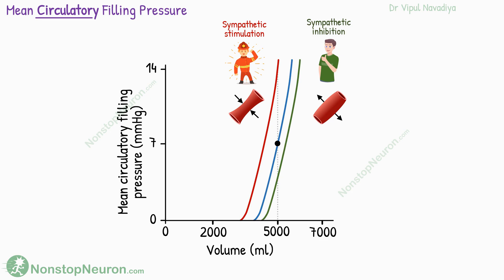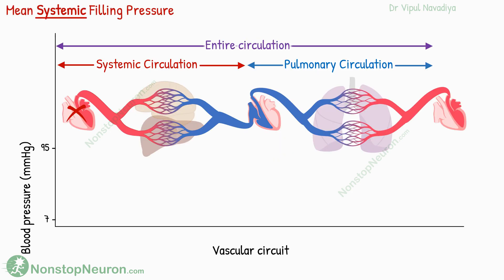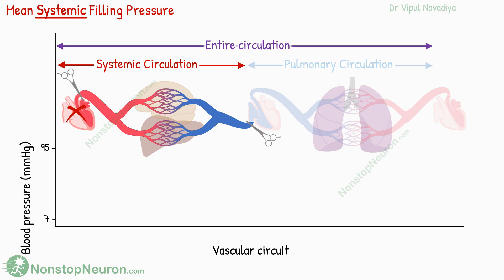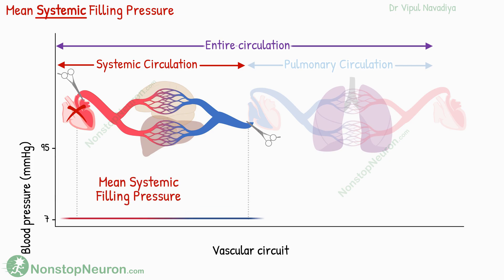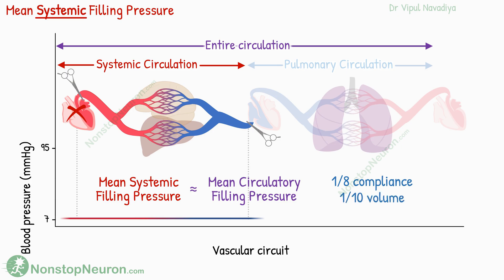So this was mean circulatory filling pressure. Now let's talk about mean systemic filling pressure. If we clamp the large arteries near the heart, the systemic circulation gets disconnected from the pulmonary circulation. The filling pressure in the systemic circulation in this case is called mean systemic filling pressure. It's almost the same as mean circulatory filling pressure because the pulmonary circulation has less than one-eighth as much compliance as systemic circulation and only about one-tenth as much blood volume.